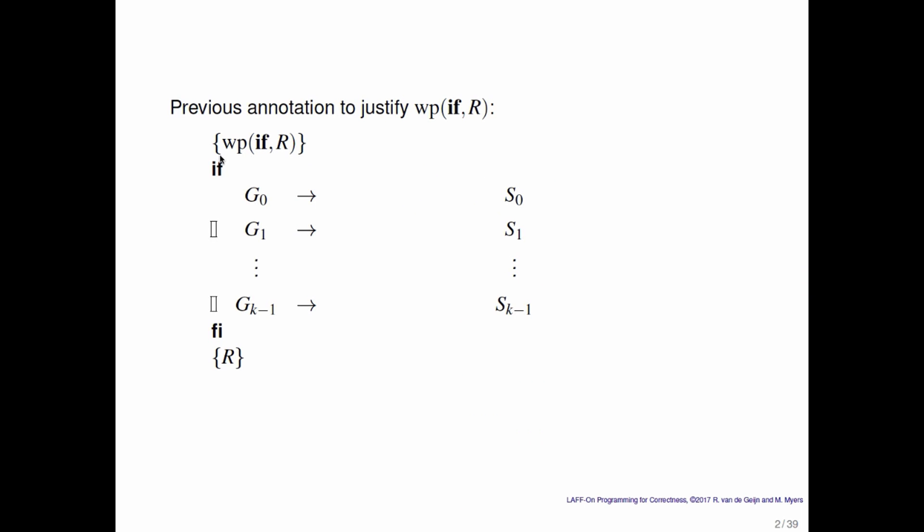What did we do previously? Well, we had a prototypical if command, and what we said was if we know that R has to be true after the command is finished, then if any of the guarded commands is executed, R must be true after that command. And then we said that means the weakest precondition has to be true before the command is executed, and that then allowed us to discuss what the weakest precondition of the if command was.